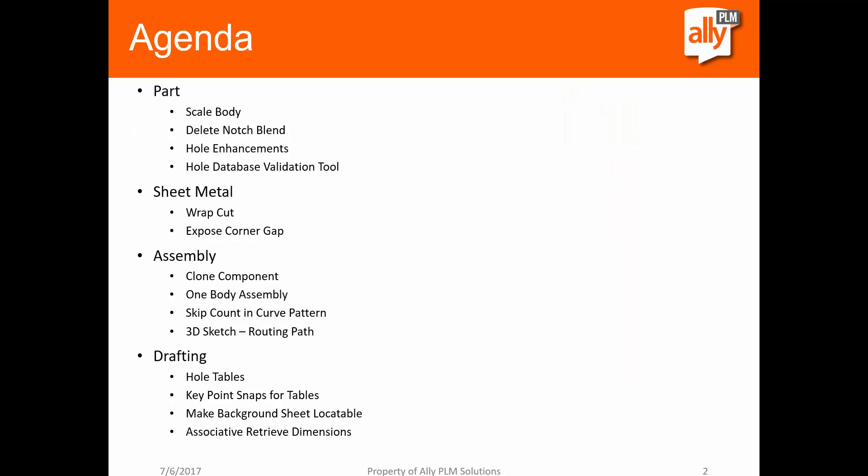For today's agenda, we're going to be taking a look at the core functionality added inside Solid Edge in the part environment — things like the scale body command for synchronous bodies, some hole enhancements. We'll get into the sheet metal environment, some new options with creating cuts over bends. In the assembly environment, the clone component command, how to create a one-body assembly, and some new options in 3D sketching with the routing path command.